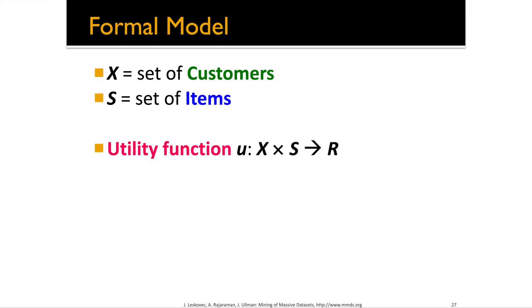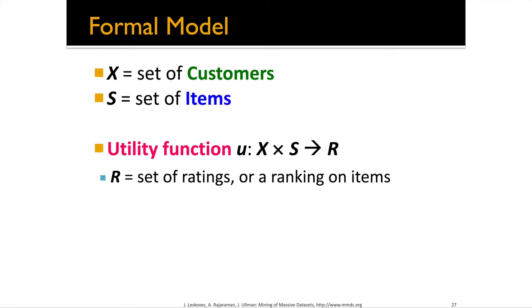Let's formalize the idea of recommendation systems. The formal model has a set of people X — individuals or customers — and a set of items S we want to recommend, whether products, videos, or advertisements. We want to create a utility function that takes a combination of people and items and produces a rating — a way to evaluate how likely a particular user is to enjoy or engage with a particular item. This rating allows us to build a ranking, so we can say this item is ranked higher than another for a given user.